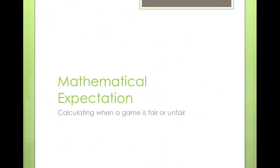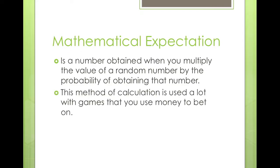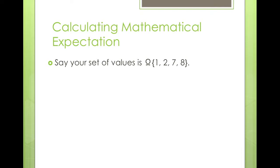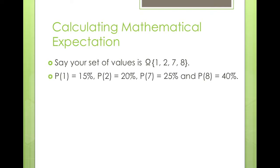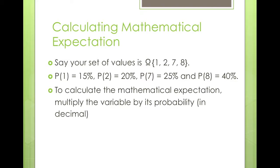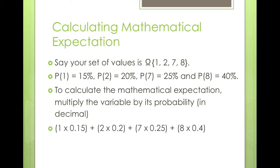Mathematical expectation is a number obtained when you multiply the value of a random variable by the probability of obtaining that value. This method is used a lot with money-based games. For example, with a set of values omega = {1, 2, 7, 8} with probabilities 15%, 20%, 25%, and 40% respectively, you multiply each variable by its probability in decimal form: 1×0.15, 2×0.2, 7×0.25, and 8×0.4. Adding these together gives a mathematical expectation of 5.5.